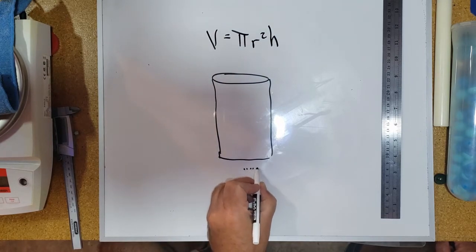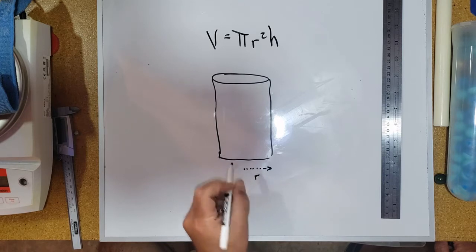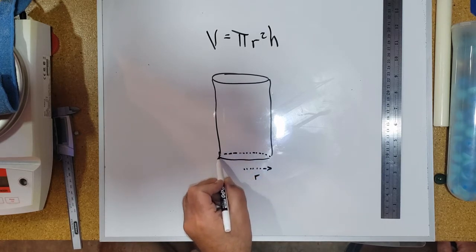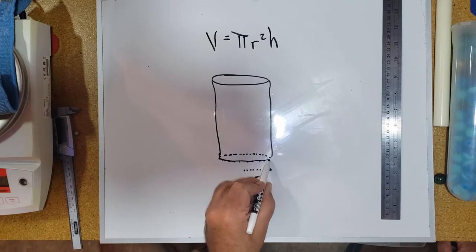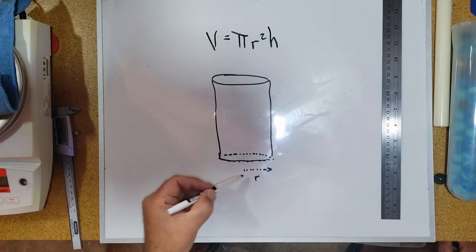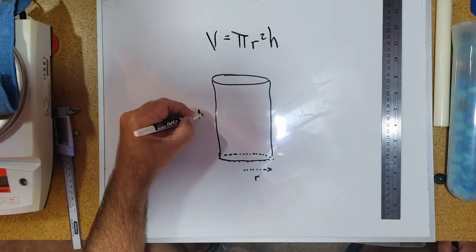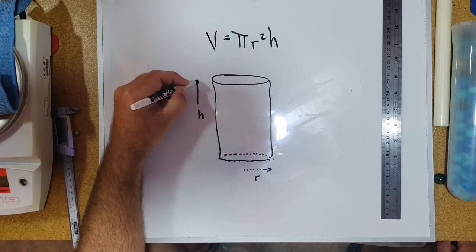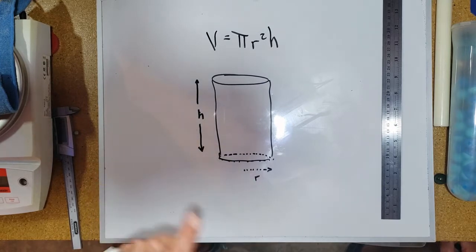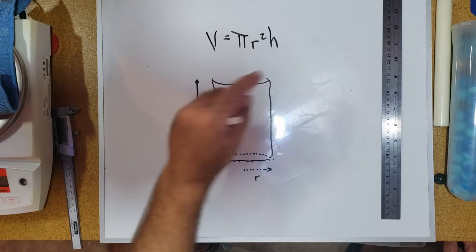r is the radius of the base of the cylinder. Let's draw this in here. If the base is a circle, that circle has a radius r. In this formula is the measurement of that radius, and h is the height of the cylinder.